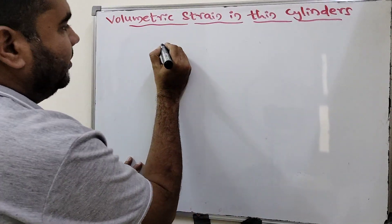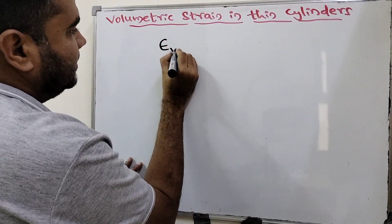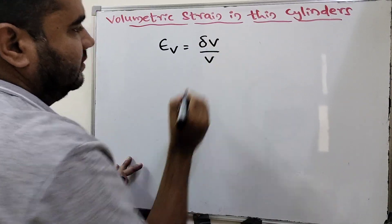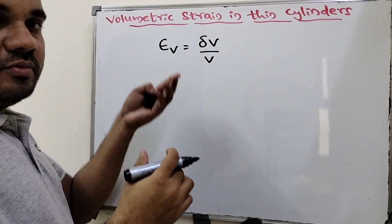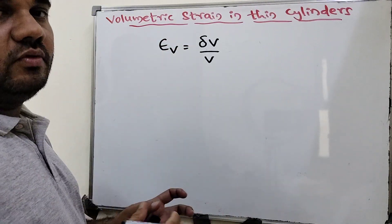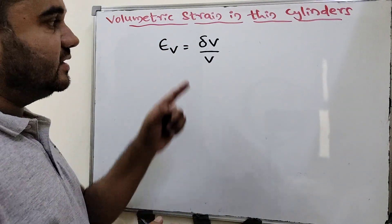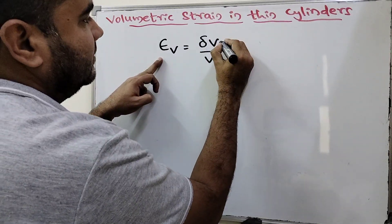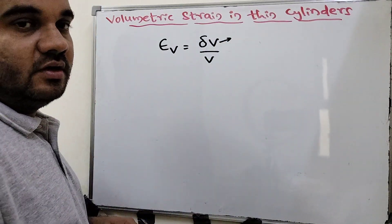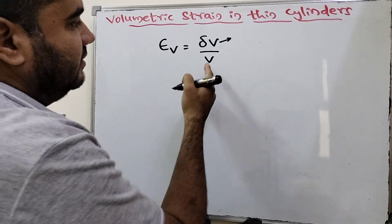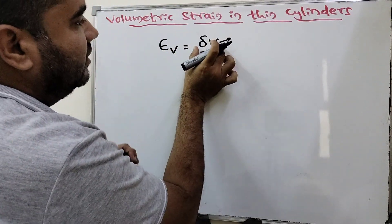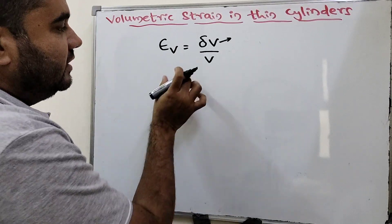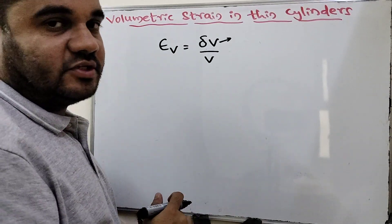As we know, the volumetric strain is the change in volume divided by the original volume. We need to find what the change in volume is. To calculate dV divided by original volume, we will start with the actual volume equation first.